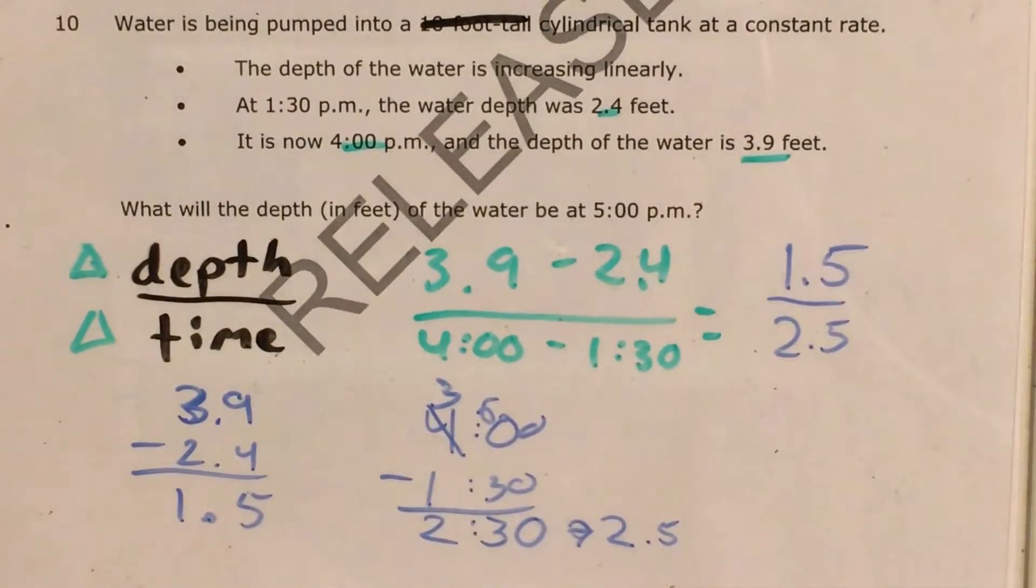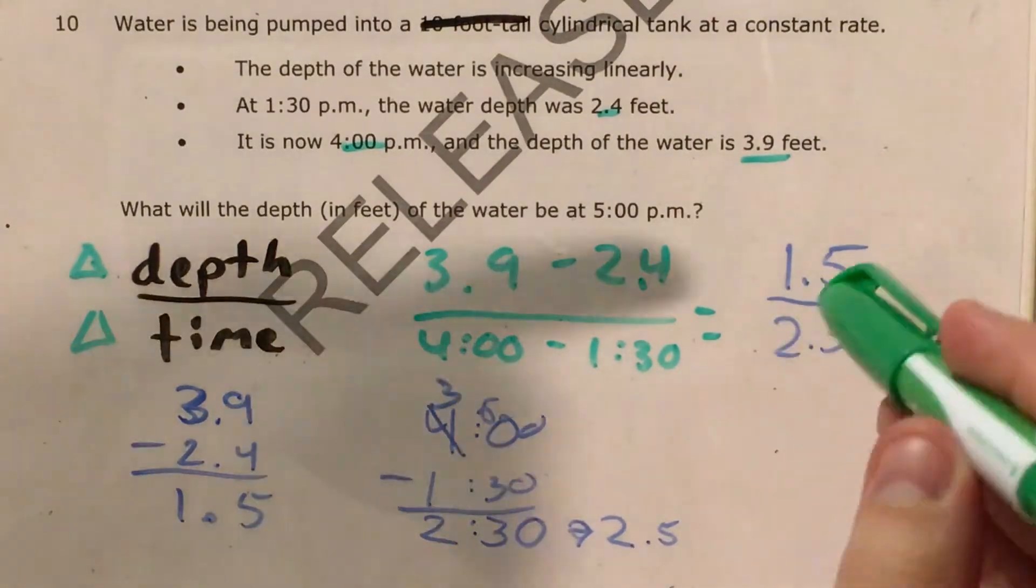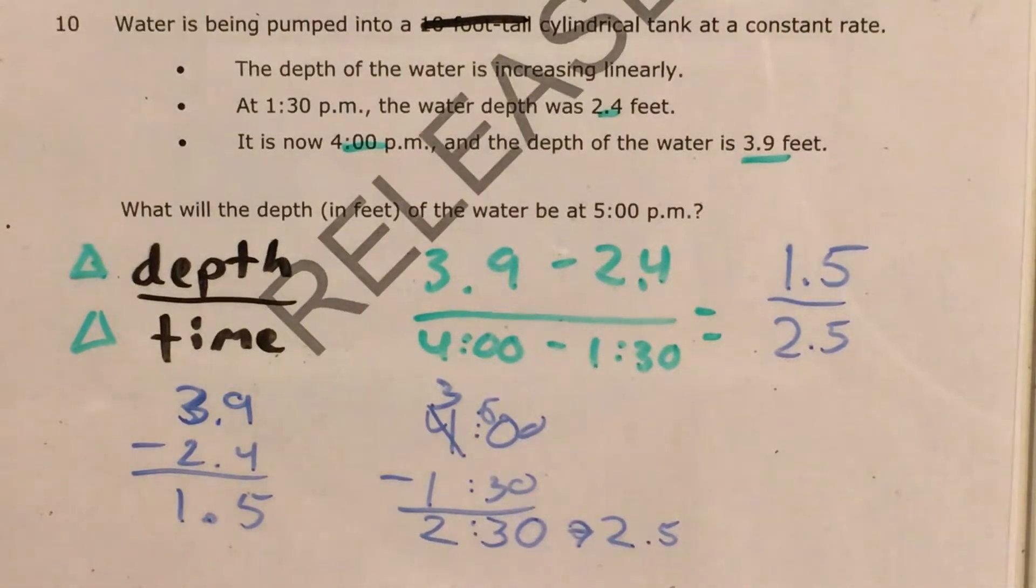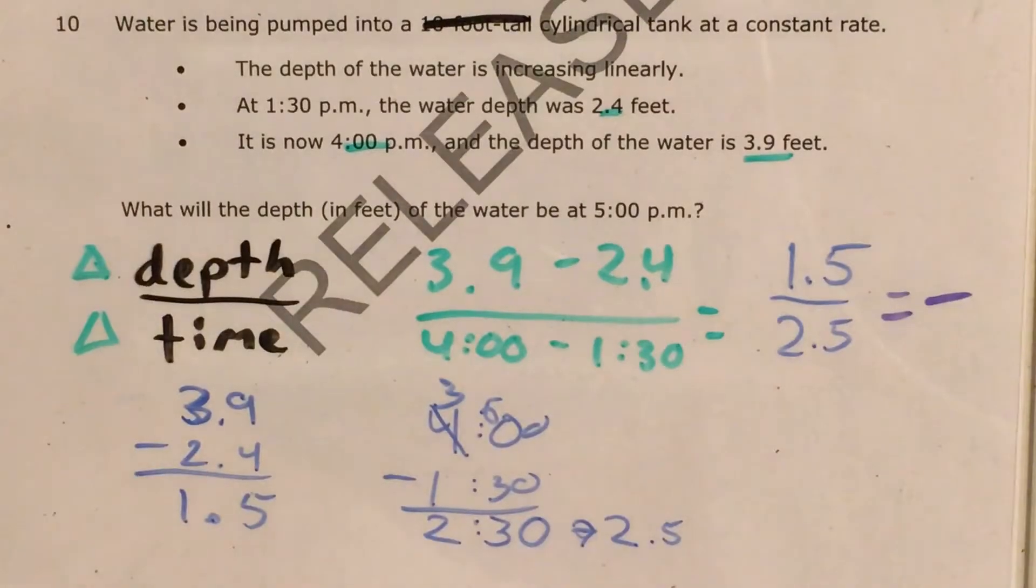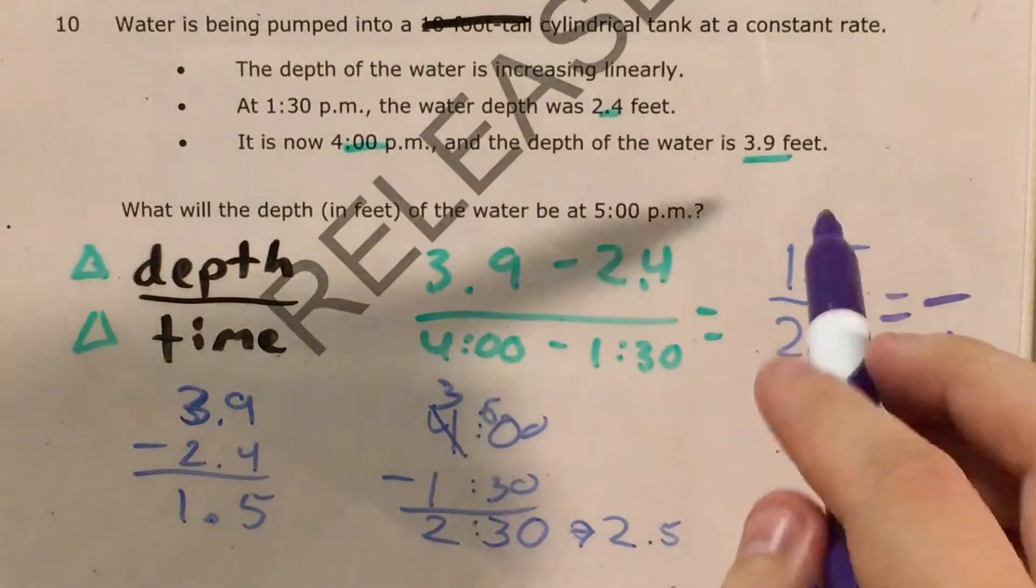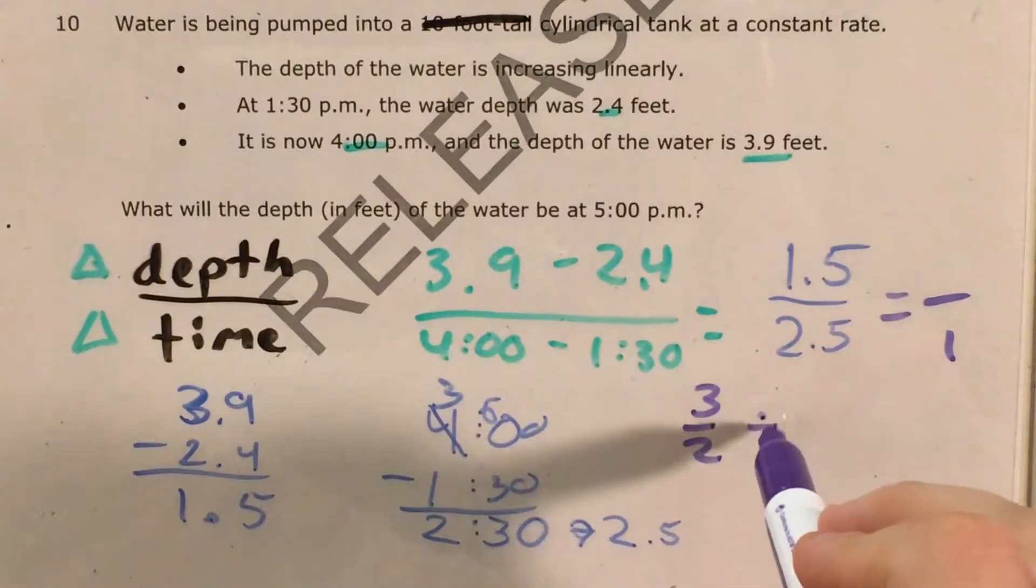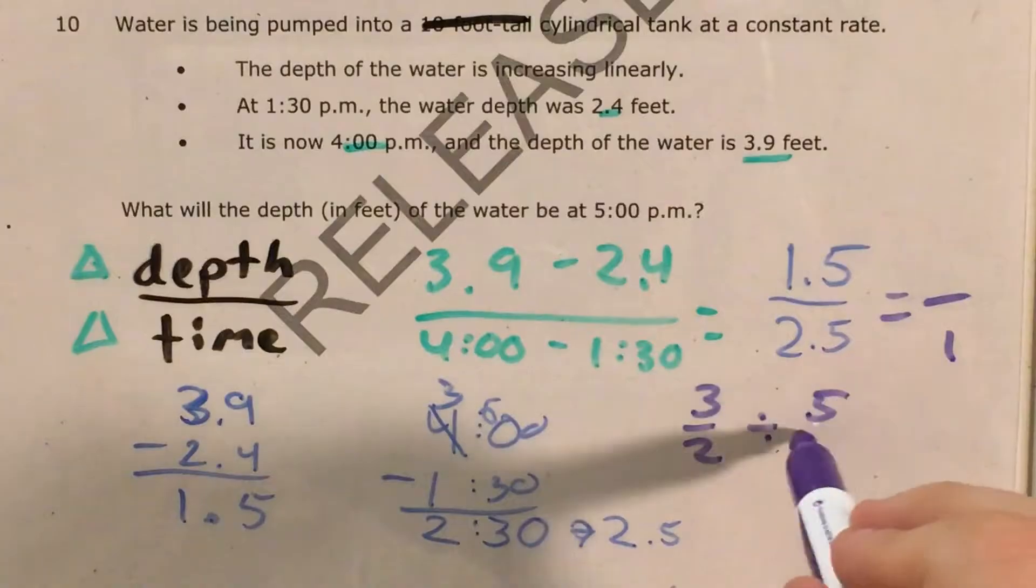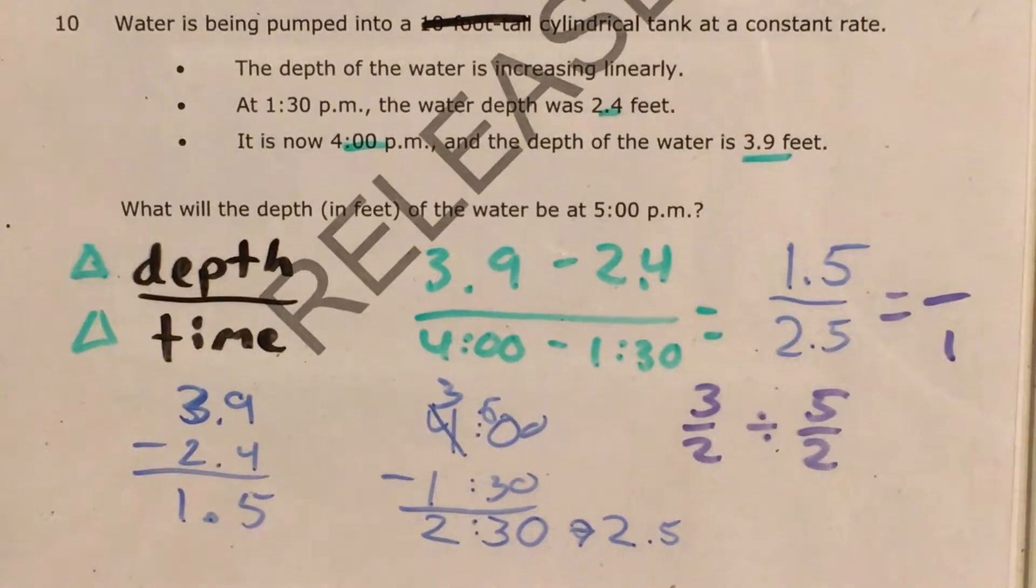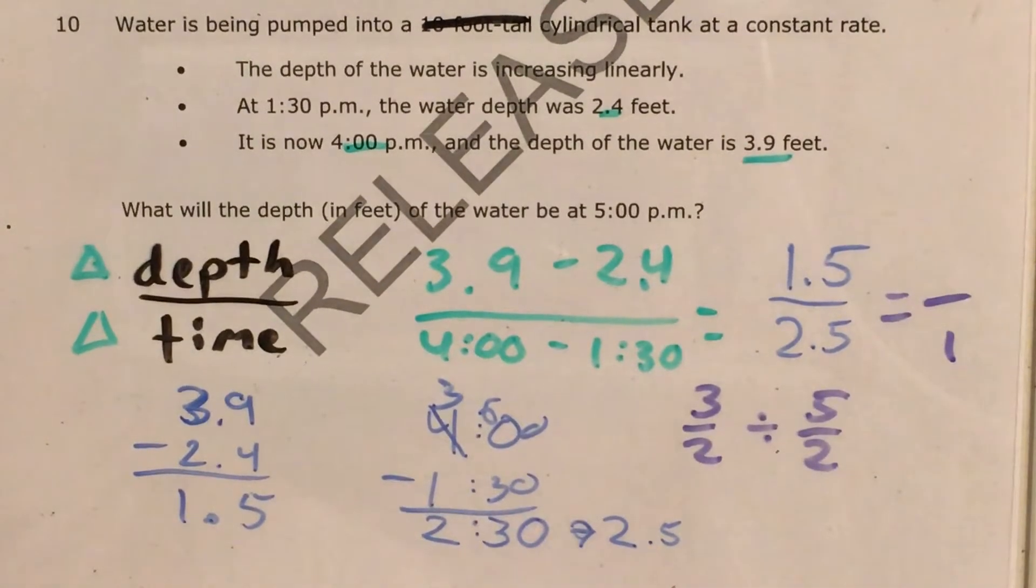So now I have 1.5 feet in 2.5 hours. That must be a big cylinder or a very slow pump. But anyway, now that I know that it's 1.5 feet and 2.5 hours, there's a couple different ways now that I can go about actually figuring out the unit rate in terms of how many feet the water is increasing by every 1 hour. I could change this into an improper fraction and go ahead and do a fraction division. I could try to divide the decimals. I'm going to do it the dividing fractions way because I think it's a bit easier.